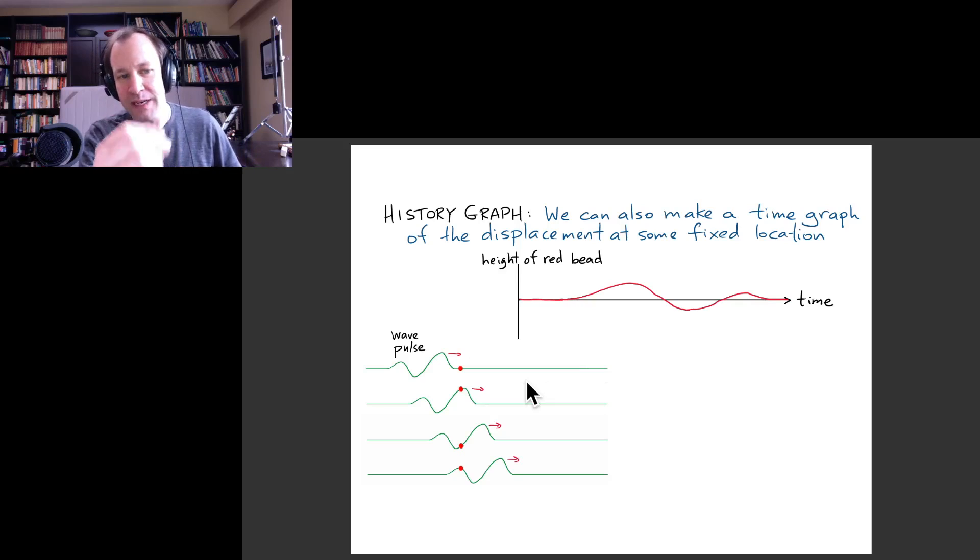How is it moving up and down as the wave pulse passes by? For that, what we want to do is make a time graph, the same sort of thing that we've been doing all along for our oscillators and other systems. We just want to imagine making a time graph for the height of that bead as this wave pulse travels by.